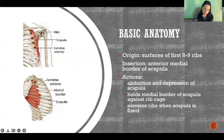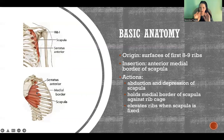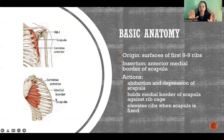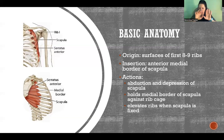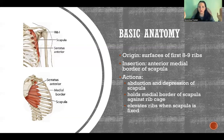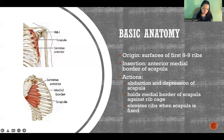When these fibers shorten, they can have a few different actions. They can pull the scapula away from the spine — so if the medial border of the scapula is moving away, that means abduction and protraction. Abduction as we come away from the spine, protraction as the scapula curves away and around — abduction in the frontal plane and protraction as we curve forward. Also depression of the scapula: the lower fibers, if they pull down on the scapula, that would be depression.